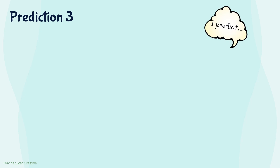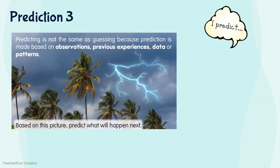Prediction number three. Prediction is not the same as guessing because prediction is made based on observations, previous experiences, data or patterns. Observe the picture carefully. Based on the picture, predict what will happen next.